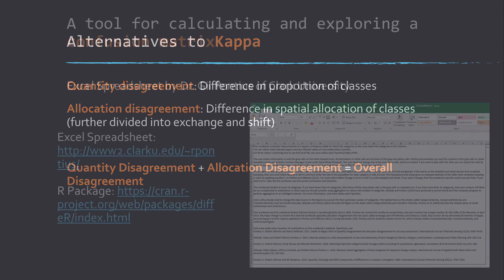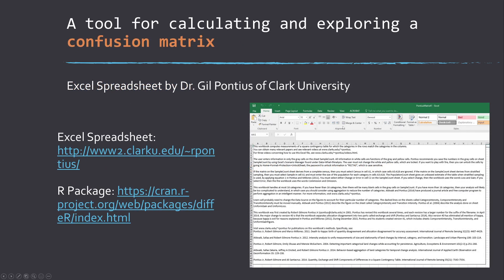If you are interested in playing around with this, calculating confusion matrices, you may want to look at this table that was made available by Gil Pontius at Clark University. It also calculates allocation and quantity disagreement measures, so there's a link to it there.